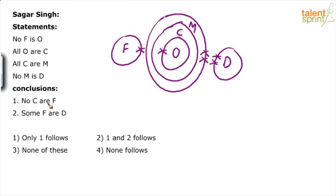No C are F. Is it true? Well, if you look at the basic diagram, it is true. C and F cannot touch each other. So when you take the basic diagram, yes, it is true. But will it always be true?